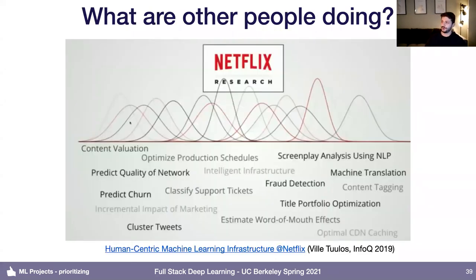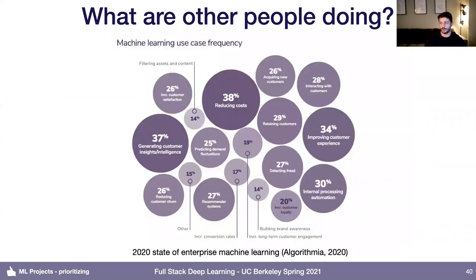Another approach worth mentioning is the copycat approach — why reinvent the wheel? If you're working at a company, in most cases your company has a lot of similarities with other companies, so just look at what other companies are doing. For example, Netflix research published a talk covering many different use cases of machine learning within Netflix. There's also an industry report from Algorithmia, where they surveyed a bunch of machine learning practitioners in bigger companies about which use cases of machine learning they're actually deploying.